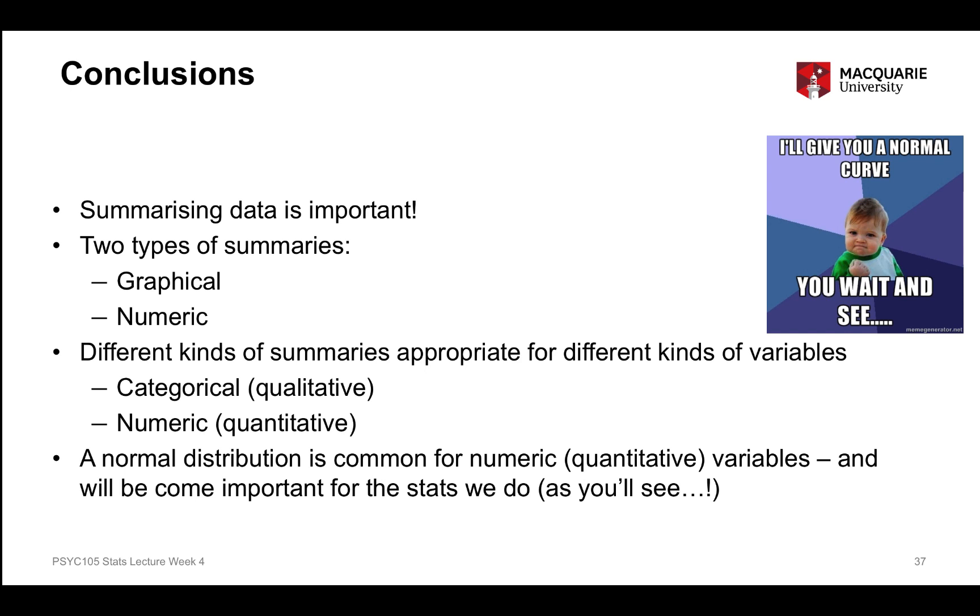So thinking about the features of a normal distribution are really important, but also because they just tend to be quite common ways of summarising information for the things that you see in the world. For a lot of physiological parameters, even for a lot of psychological parameters. So things tend to be normally distributed. Variables tend to be normally distributed if they're numeric variables.